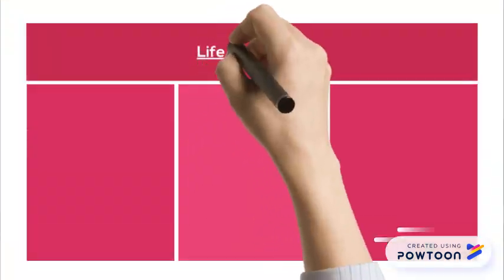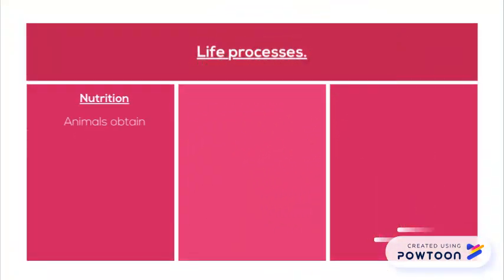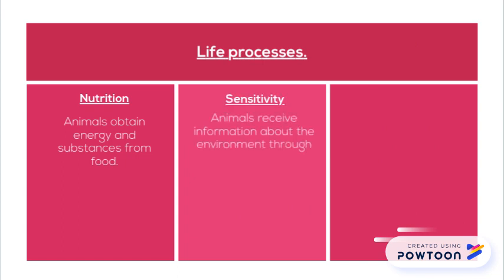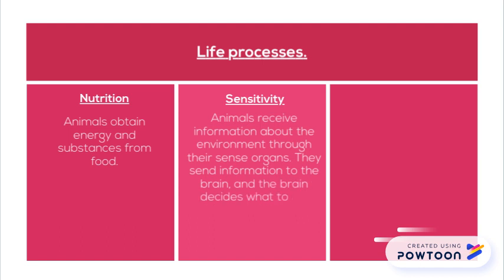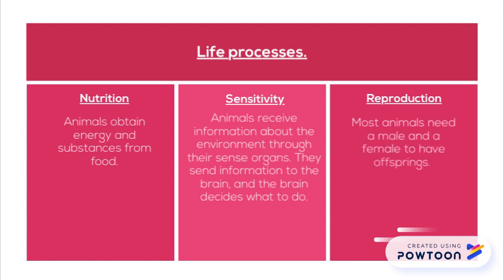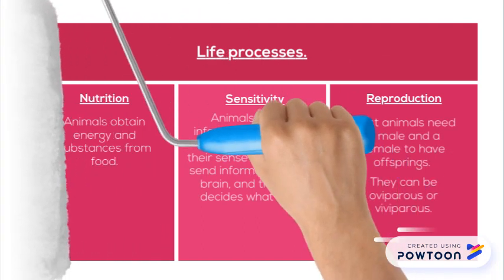Life processes. Animals obtain energy and substances from food. Animals receive information about the environment through their sense organs. They send information to the brain and the brain decides what to do. And reproduction — most animals need a male and a female to have offspring. They can be oviparous or viviparous.